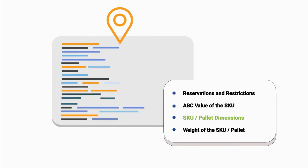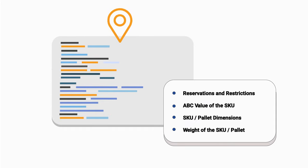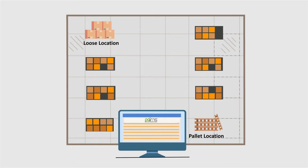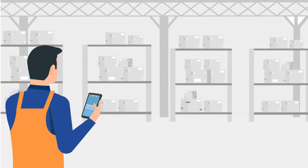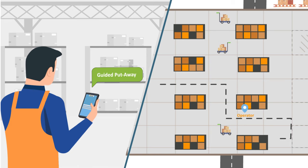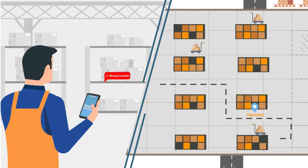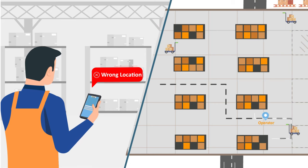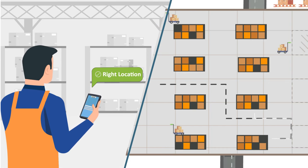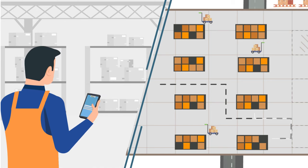The algorithm also considers SKU or pallet dimensions and the weight of the SKU or pallet. The system automatically suggests different locations for pallets and loose SKUs, and guides the put-away team to put away SKUs in the designated locations by calculating the optimal put-away path using preset algorithms. Feedback is provided to the operator at each stage during the guided put-away operation to ensure SKUs are placed in the right locations and that put-away is completed in the minimum possible time.